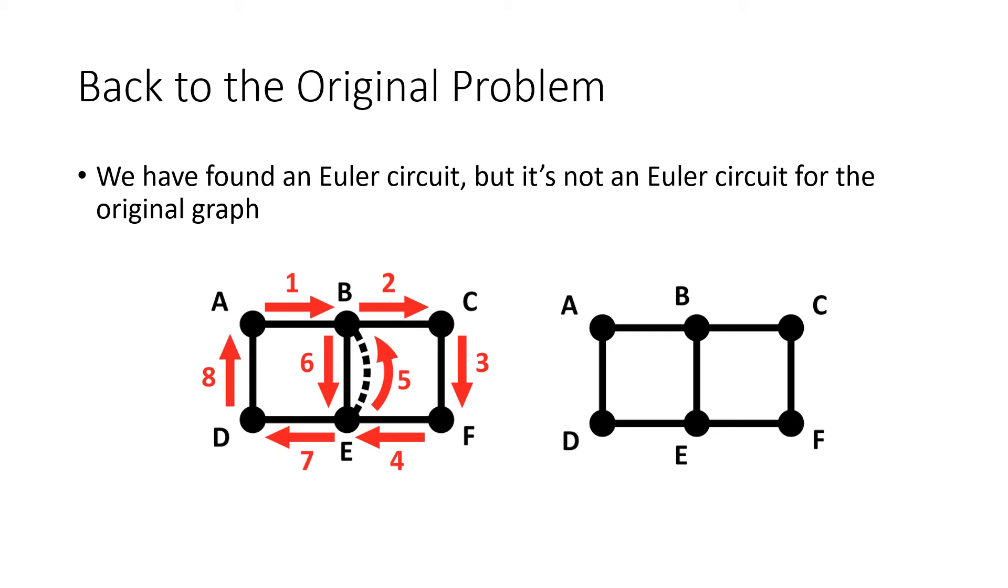Well, if we list the vertices on the Euler circuit that we found, which would be A, and then B, and then C, and then F, and then E, and then B, and then back to E, and then D, and then A, we can follow that list of vertices on the existing graph.